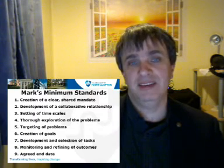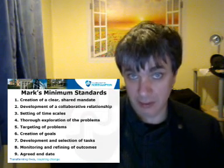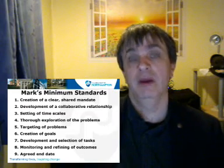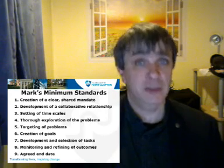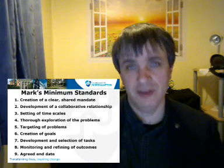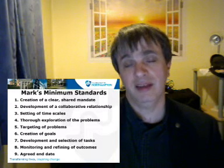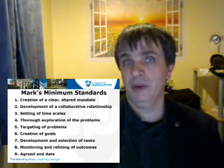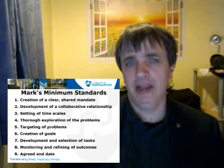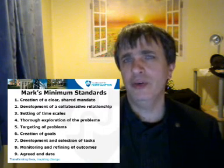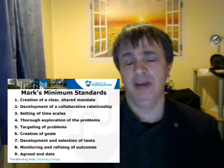Number one: the creation of a clear shared mandate — what gives you the right to intervene in someone's life? Often that's because people have asked you to be there (consent), but sometimes you have a duty to be there, as in certain mental health or child protection settings. Number two: the development of a collaborative relationship based on equality, sharing, and mutuality. If you're telling people what to do and giving them tasks, that's not task-centred practice — it needs to be a genuinely collaborative relationship.